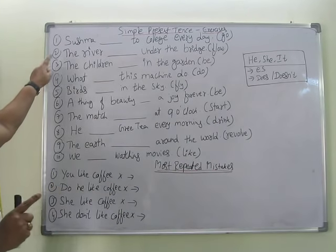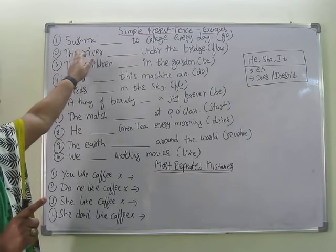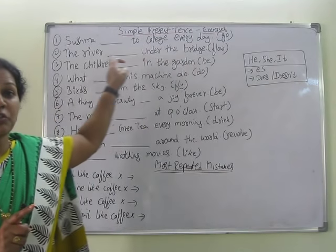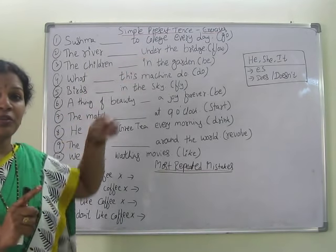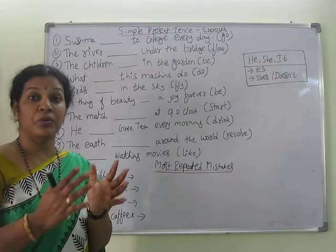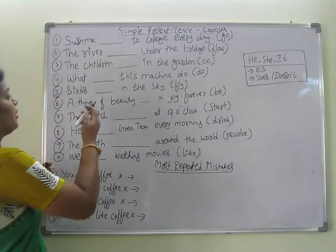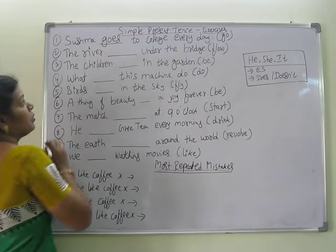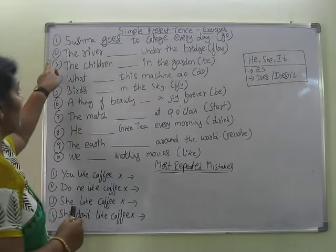The first one is: Sushma ___ to college every day. In brackets, 'go' is given. Do we say 'Sushma go' or what? Sushma goes — she goes to college every day. So in the fill-in-the-blank we write: Sushma goes to college every day.